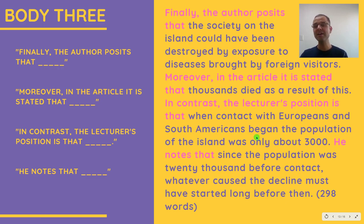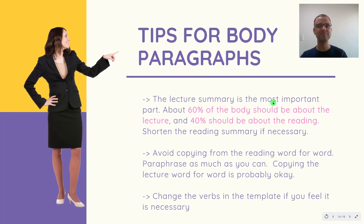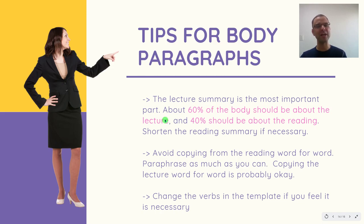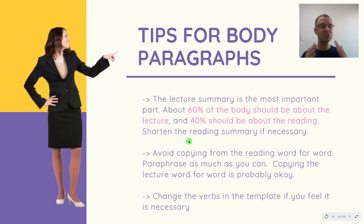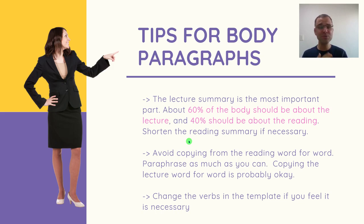That brings us to the end of this essay. This one came out to 298 words. Now, a few tips for writing body paragraphs: I really need to stress that the lecture summary is the most important part of your essay. About 60% of the body should be about the lecture — I did the math on my sample and it turned out to be exactly 60%. The remaining 40% of the body should be about the reading. If you need to shorten something, shorten the reading summary — you can cut it down to one sentence per body paragraph if necessary, but never shorten the lecture summary.